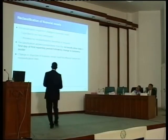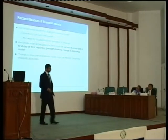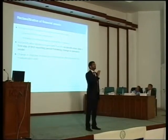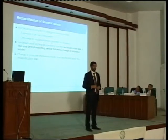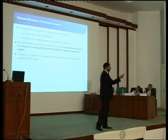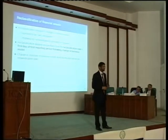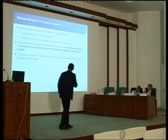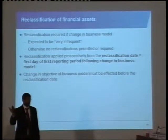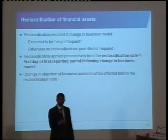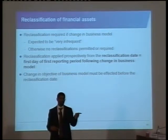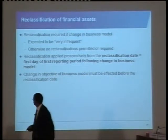Even if you do change, there's a massive anti-avoidance provision. If you decide to change your business model on the 2nd of February, you can only account for the change from the following year's 1st of January. You account for it prospectively from the first day of the first reporting period following the change in the business model. So if you are trying to hide something, you can't — we're going to see it.